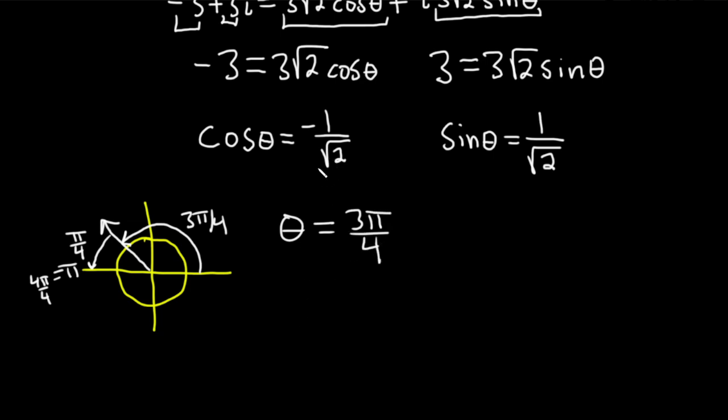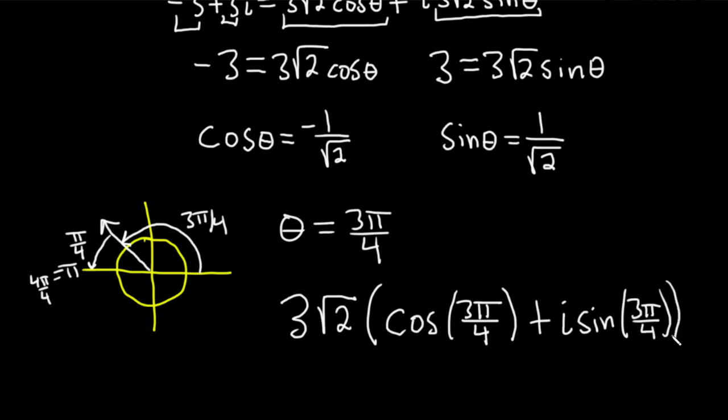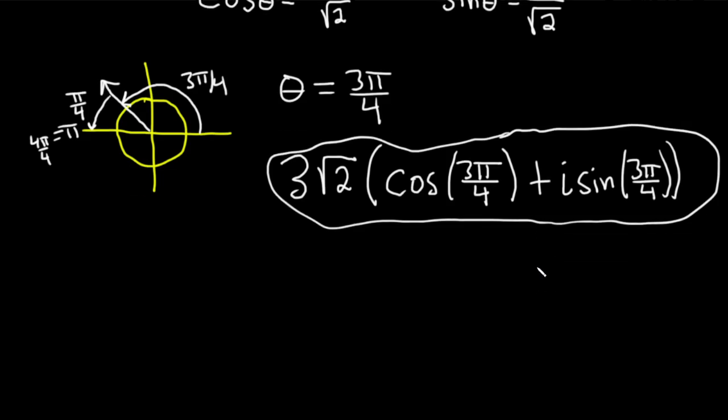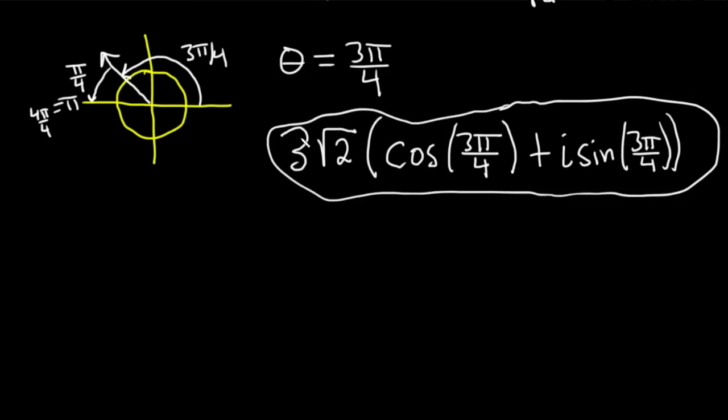Now we can write our answer down. It'll be r, which was 3 root 2, parentheses, cosine theta, so cosine of 3 pi over 4, plus i sine of 3 pi over 4. This would be the polar form of our complex number. It's also called the trig form, or the trigonometric form. And there's actually another way you can write it. So this is the same thing as saying, 3 root 2,